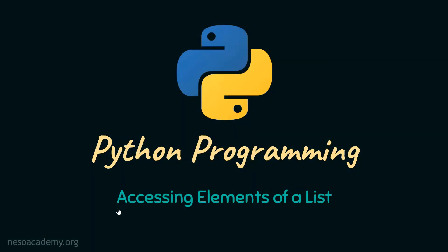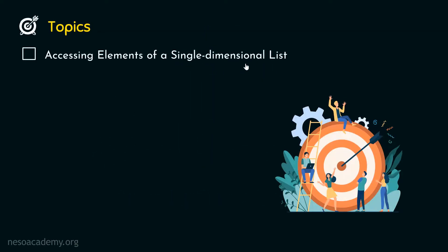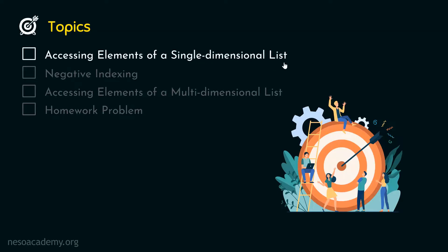In the last presentation, I introduced you to the concept of lists. Now, in this presentation, we will understand how to access individual elements of a list. The first topic is accessing elements of a single dimensional list. The second topic is negative indexing. The third topic is accessing elements of a multi-dimensional list. After discussing these topics, we will move on to the homework problem of this presentation. Let's get started with the first topic: accessing elements of a single dimensional list.